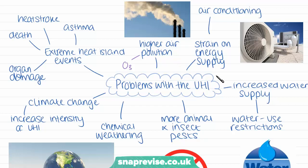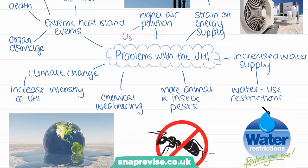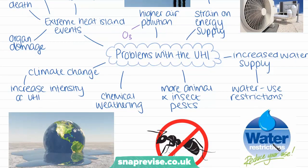Additionally, the urban heat island can end up putting more strain on energy supplies and water supplies. As cities get hotter and hotter, people are going to be using more air conditioning to cool down their homes, offices and businesses, which requires an energy supply. Even though it's cooling the interior environment, air conditioning units will start to heat the outside environment due to the fuel being burnt to fuel them. This also places extra strain on water supply and can lead to water use restrictions such as hose pipe bans. Evaporation and transpiration rates will be higher in city areas because it's hotter, so water evaporates faster and plants extract more water from the soil at a greater rate, leaving soils very dry.